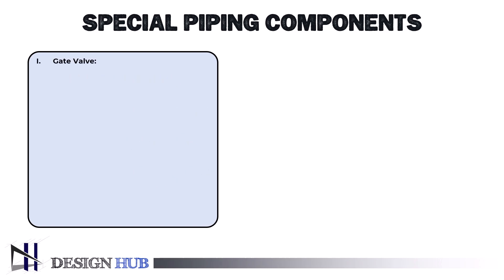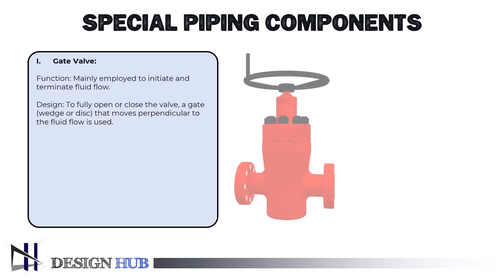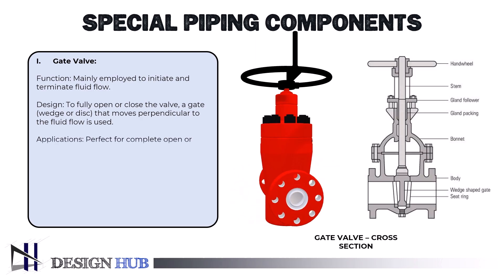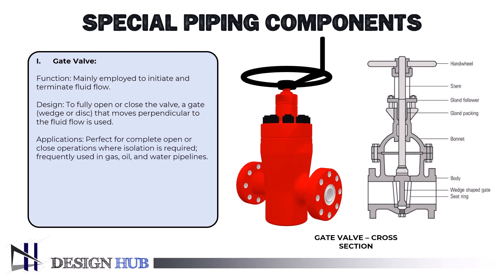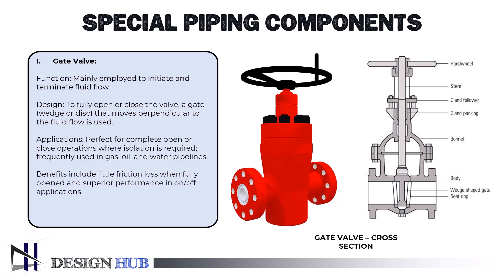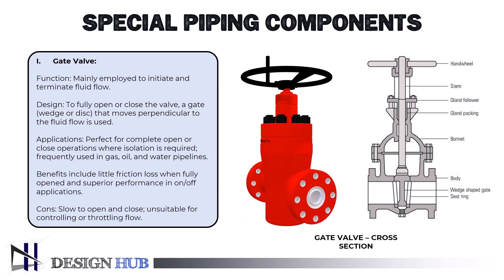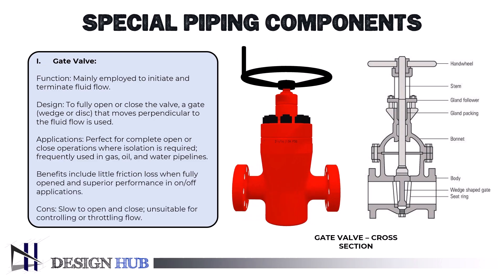Let's see what a gate valve is. Sometimes referred to as a sluice valve, it opens by raising a barrier, or gate, that blocks the fluid's flow. Gate valves need extremely little space along the pipe axis and rarely limit the flow of fluid when the gate is fully opened. Though they can be parallel, the gate faces are often wedge-shaped so that pressure can be applied to the sealing surface.